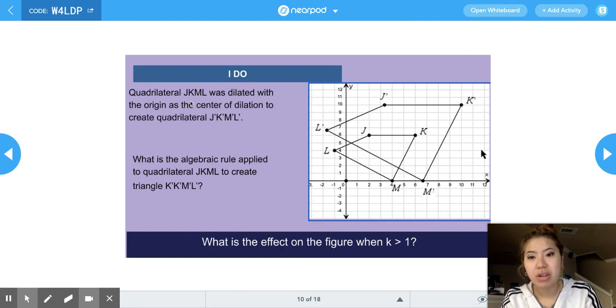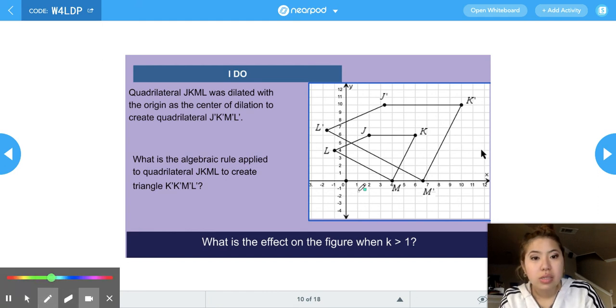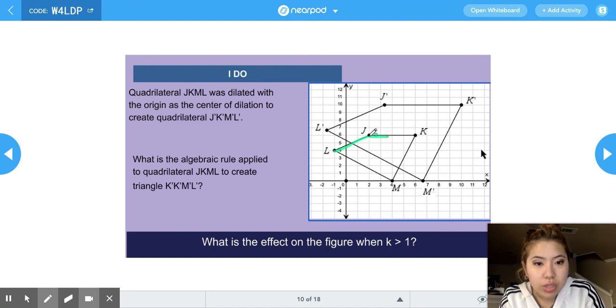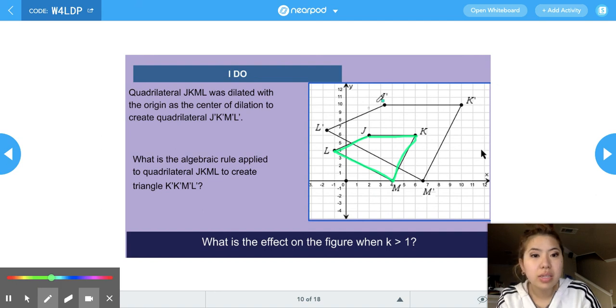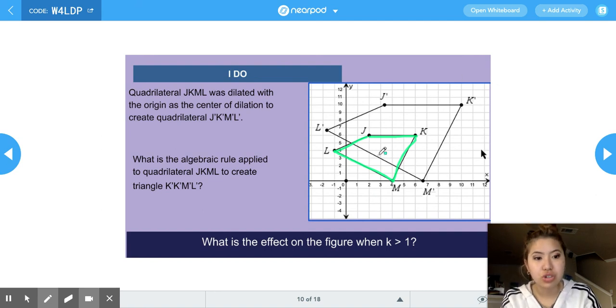The next I do reads quadrilateral JKML was dilated with the origin as the center of dilation to create quadrilateral J', K', M', L'. What is the algebraic rule applied to quadrilateral JKML to create the dilated triangle? So first I'm going to start off by highlighting what our original shape was. So in this case, as you can see, our original shape. And because our dilated shape is bigger than that original shape, I know that our scale factor is probably going to be greater than 1.